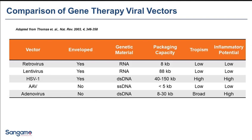There are several viral vectors used in the industry, including retrovirus, lentivirus, HSV, AAV, and adenovirus. These differ based on whether they are enveloped or non-enveloped, and they can encompass different types of genetic material — either RNA or DNA, which could be single-stranded or double-stranded. Due to the size of the virus, the packaging capacity can vary widely — from less than 5 kb up to 150 kilobases with HSV. Tissue tropism and inflammatory potential can also vary considerably depending on the virus.